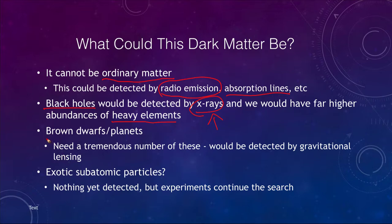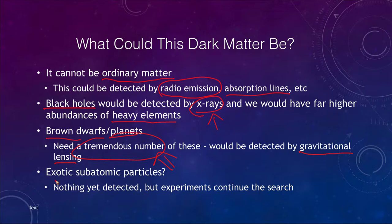How about things like brown dwarfs or planets — something very small and hard to see? Because of their low mass, we would need a tremendous number of these to account for the hidden mass. They would also still be detected by gravitational lensing as they passed in front of distant stars. How about exotic subatomic particles? Nothing has yet been detected, but this is something we are still searching for — so this is an ongoing process.